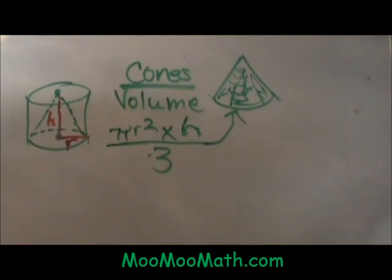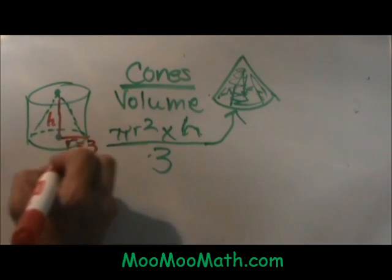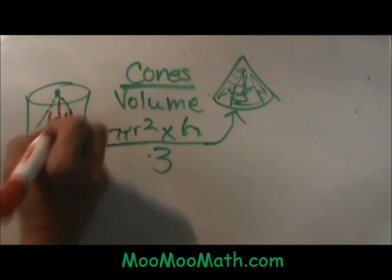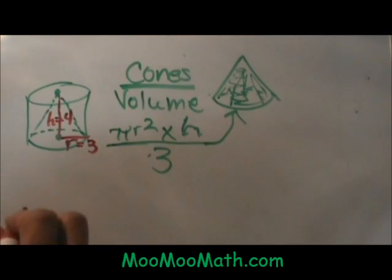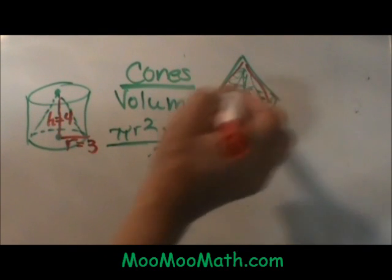Let's do an example. Let's say that our radius is three and our height is four. What is the volume of the cone? Well, we are first going to find the volume of the cylinder.